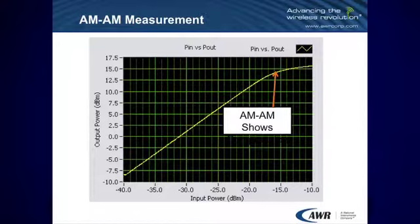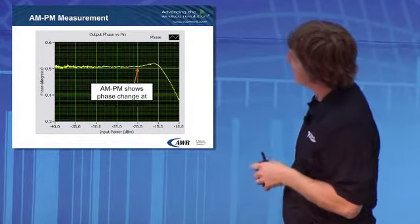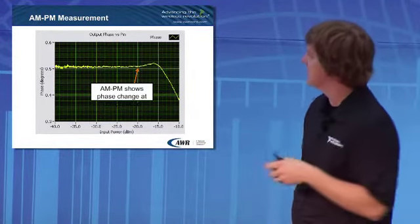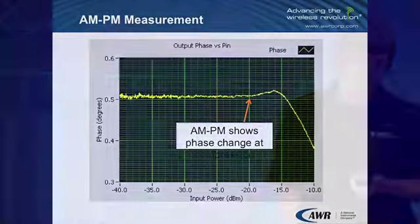From a measurement point of view, the AM to AM response is not surprising at all — exactly what you would expect from an amplifier at compression. The AM to PM response is a little interesting: in the linear region, the output phase is almost linear up until the point of compression, then there's a slight increase in phase, and as you drive further into compression, the phase decreases. This is the crucial information that you feed into the VSS simulation tool to actually model the amplifier.